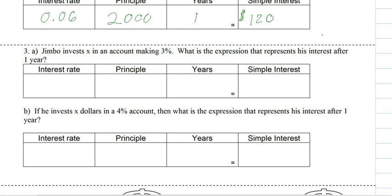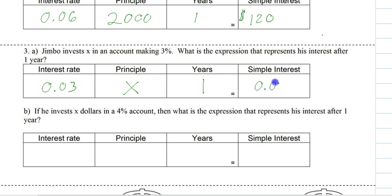Let's say that Jimbo invests X dollars, so we don't know the exact amount — we're making a formula. He's going to invest at 3%. Using 1 for the year, we get 0.03X. You do the exact same multiplication, just with a variable now.